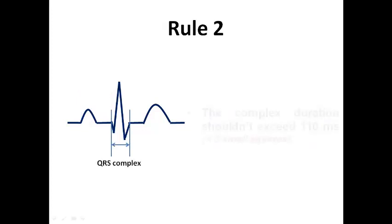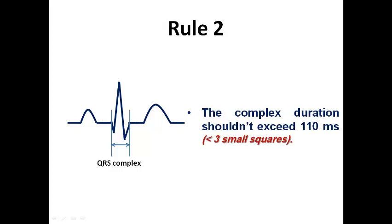Then we come to rule number two which checks the complex duration and it dictates that complex duration shouldn't exceed 110 milliseconds. This means that it should be less than 3 small squares.